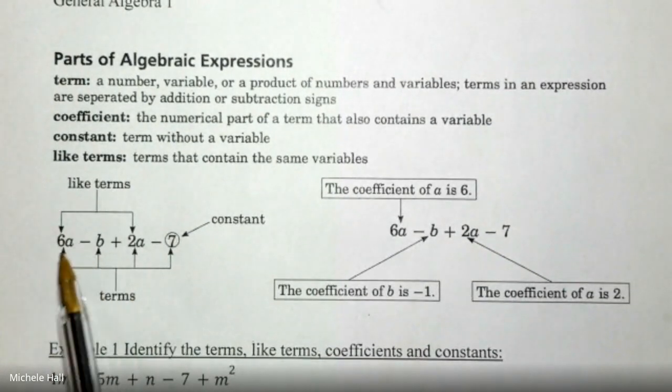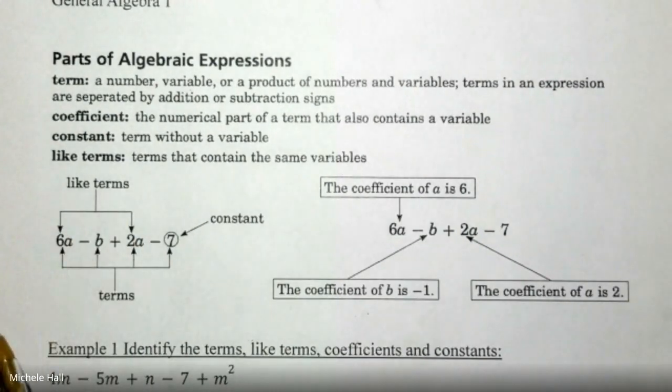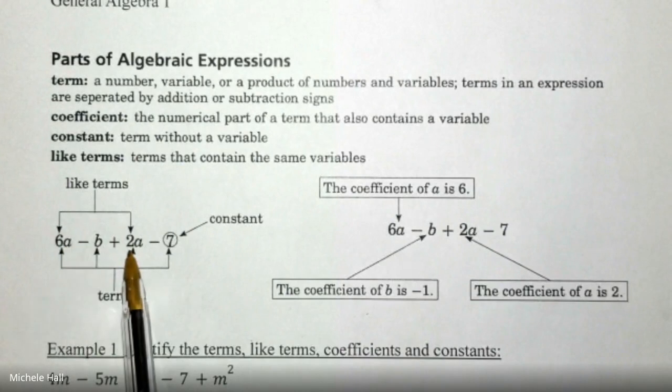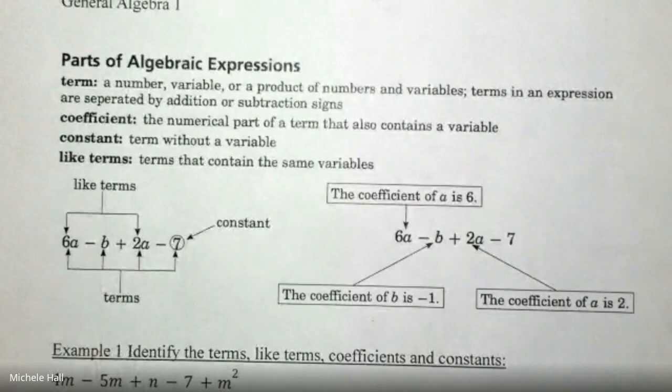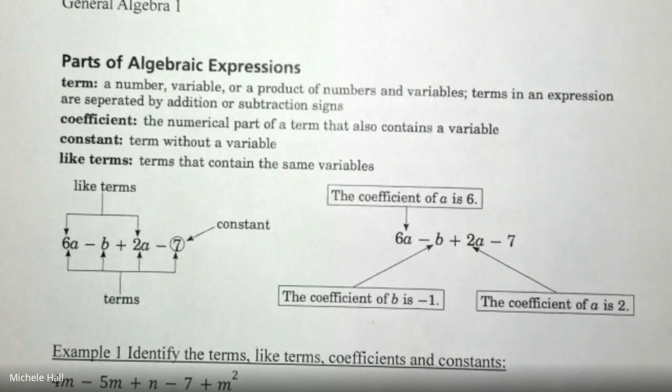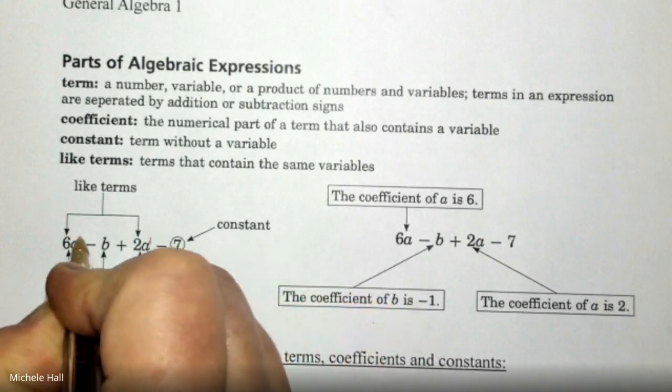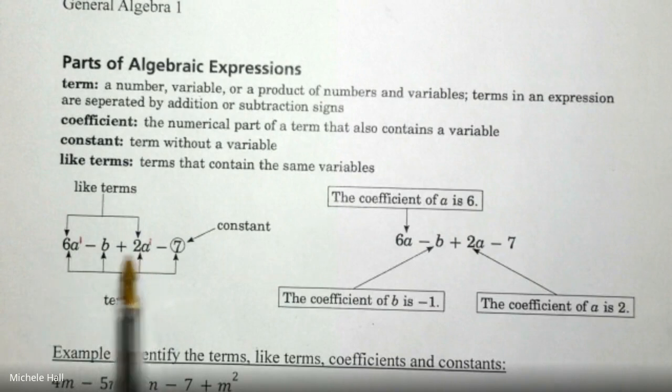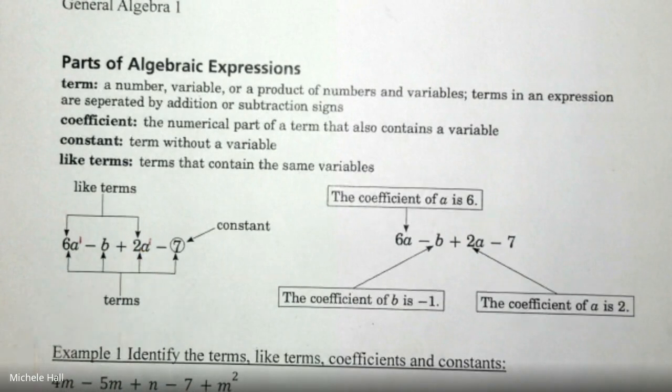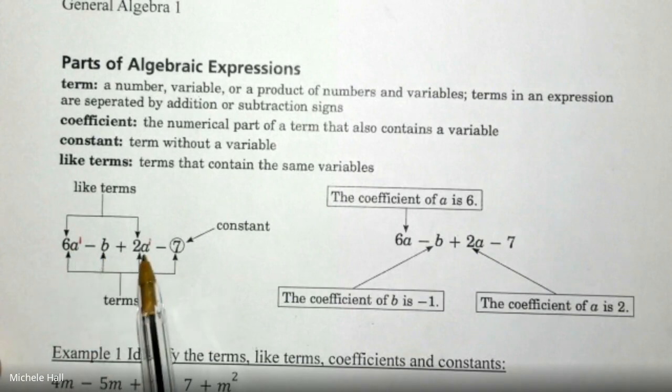We have 6a minus b plus 2a minus 7. We can see that 6a and 2a, they are like terms. I can add 6a and 2a together because they have exactly the same variable. Remember that variables have exponents, and when you don't see the exponents, it's understood to have a 1. So when you're combining like terms, the variable has to be the same and the exponent. I have 1, 2, 3, 4 terms.